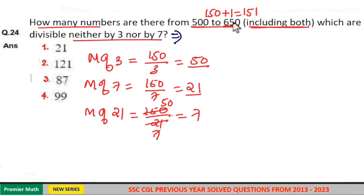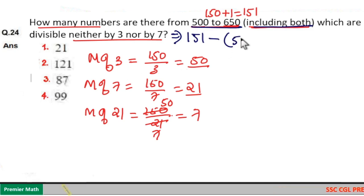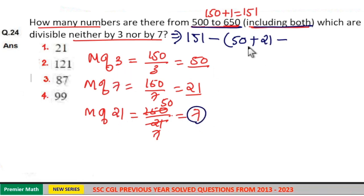Here, total numbers between 500 to 650 including both is 151. Now 151 minus multiples of 3, which is 50, minus multiples of 7, which is 21. Now these 7 numbers which are multiples of both 7 and 3 are included in these 71 numbers, so subtract the 7 numbers from the 71 numbers.